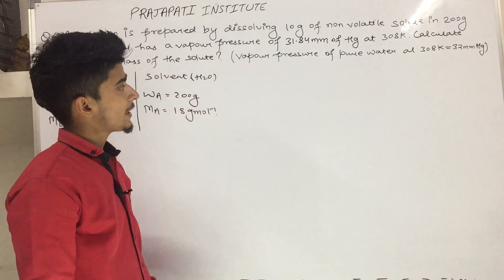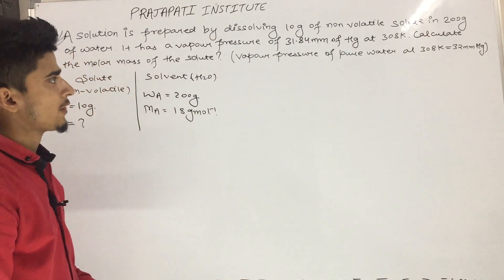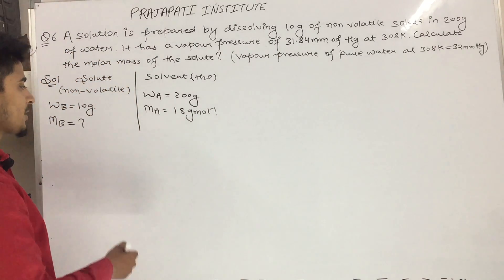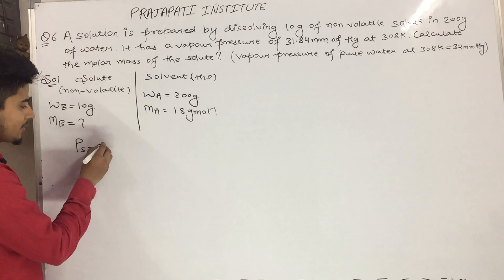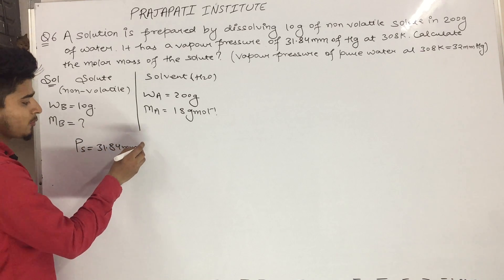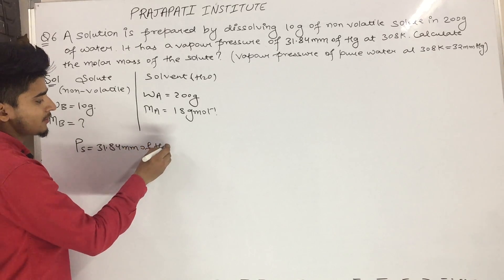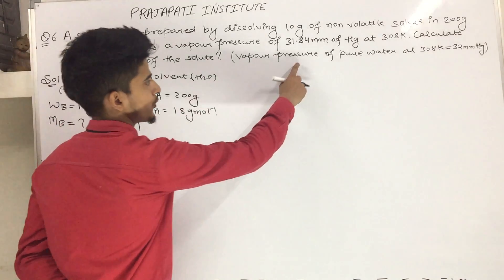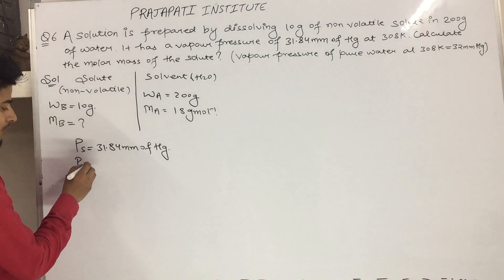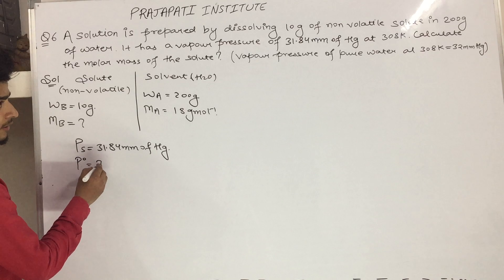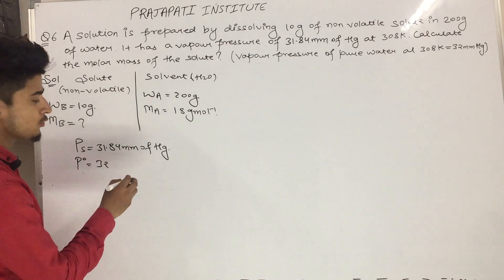It has a vapor pressure of solution, 31.84 mm of Hg. For pure solvent water, p0 is 32 mm of Hg.